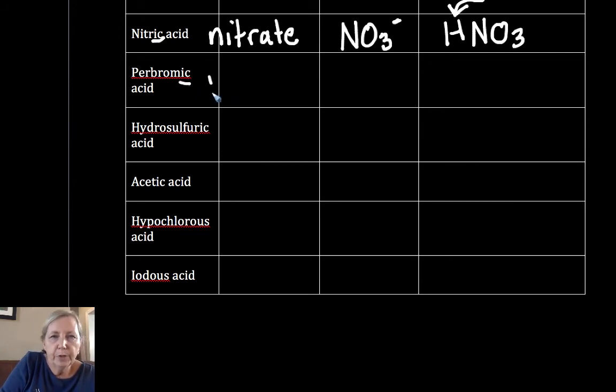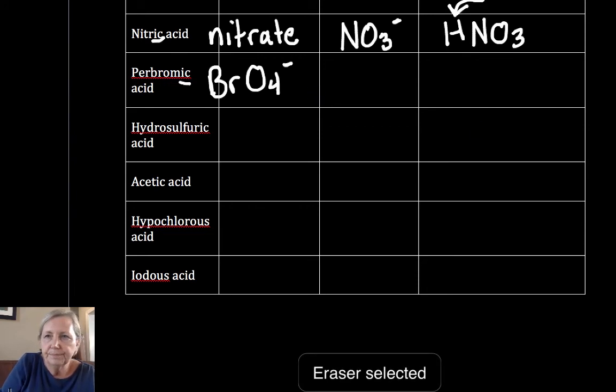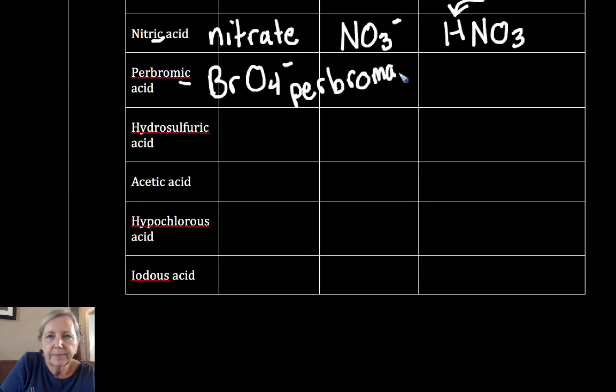Perbromic acid came from perbromate, BrO4-. That's the perbromate ion. HBrO4. Hopefully you won't need this much work as you get good at these.